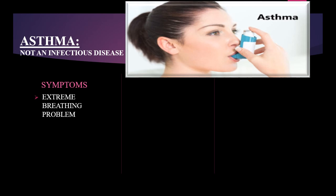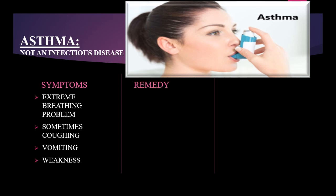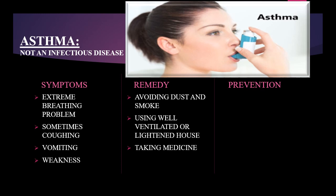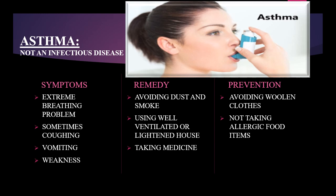Symptoms of asthma include: extreme breathing problems, sometimes coughing, vomiting may occur, and weakness. The remedy includes avoiding dust and smoke, using a well-ventilated or well-lit house, and taking medicine. Prevention includes avoiding woolen cloths, not taking allergic food items, and giving up smoking.